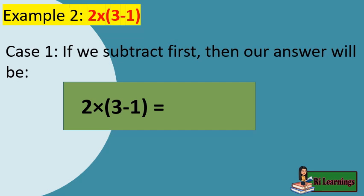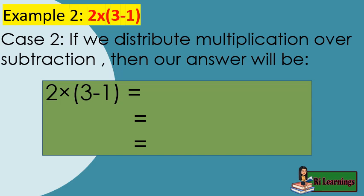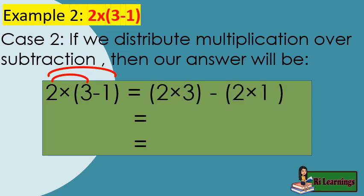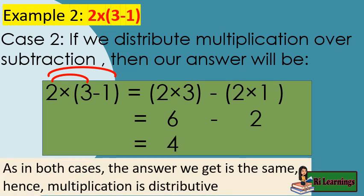Example 2, Case 1: 2 times parenthesis 3 minus 1 close parenthesis. Subtract the numbers in parenthesis first: 3 minus 1 equals 2, then 2 times 2 equals 4. Case 2: distributing multiplication over subtraction, we multiply each by 2 — 2 times 3 minus 2 times 1 — get the products: 6 minus 2 equals 4. In both cases, the answer is the same; hence, multiplication is distributive.